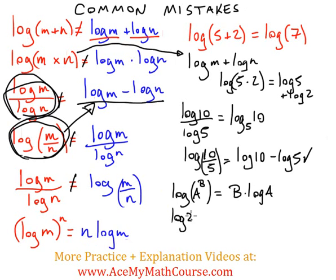So if I have log 25, that's the same thing as log of 5 squared. So I can bring down the exponent. So that's just 2 times the log of 5. That works out perfectly.